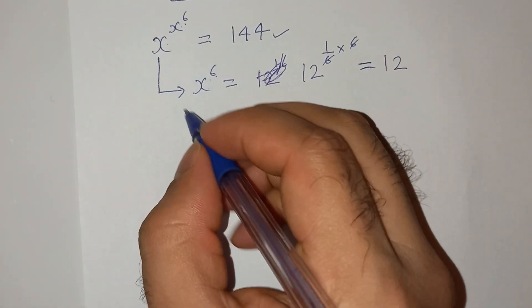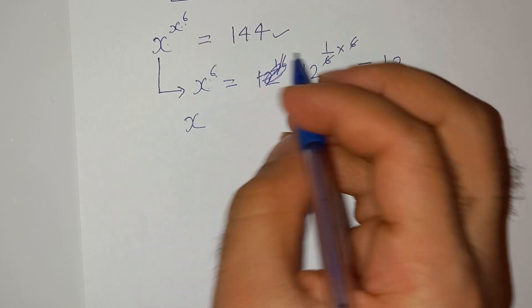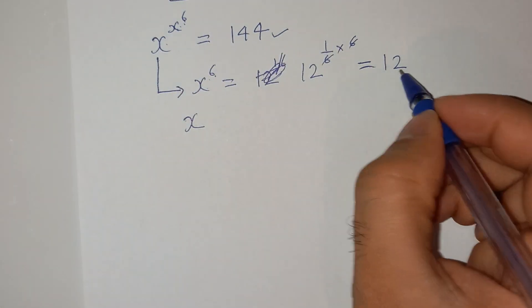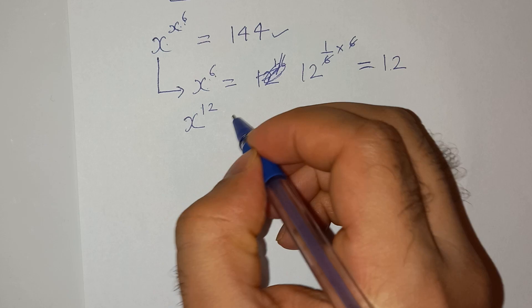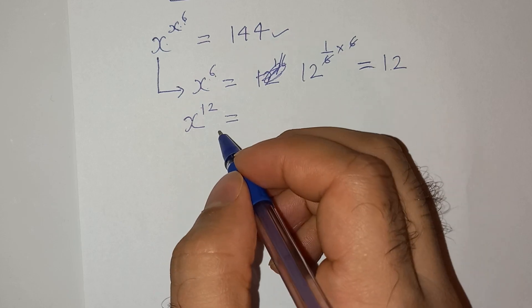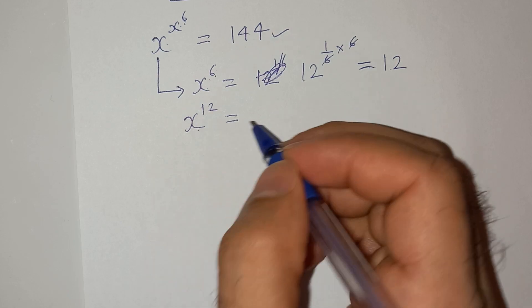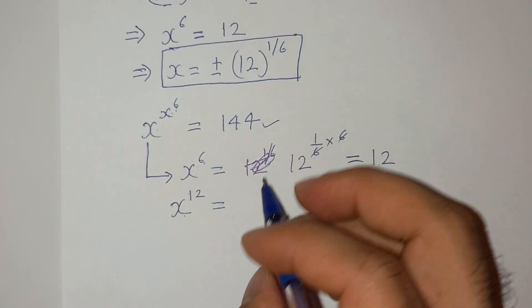Now we have to find the value of x^(x^6). The value is 12, so x^12. The value of x is again 12^(1/6).